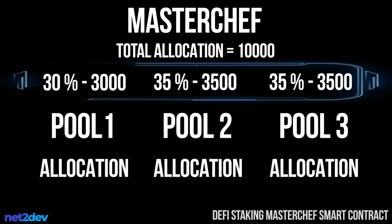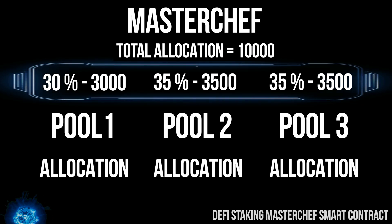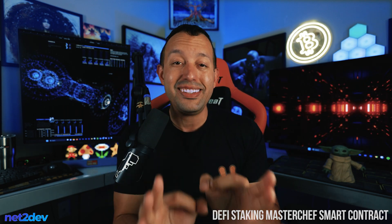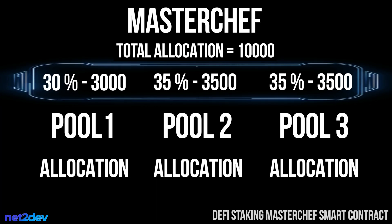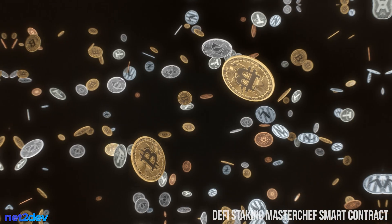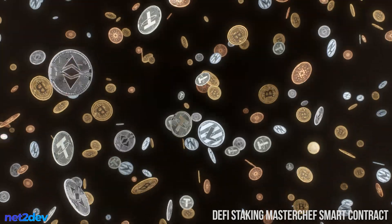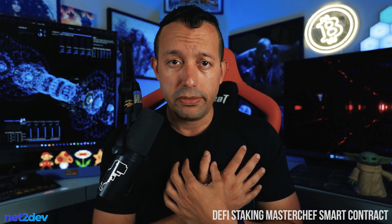The sum of all pool allocations is called the total allocation. It is very important to know this value because it provides the formula that will effectively and correctly distribute the amount of tokens needed across every single pool — it's essentially the mechanism for distributing tokens proportionally to each pool.